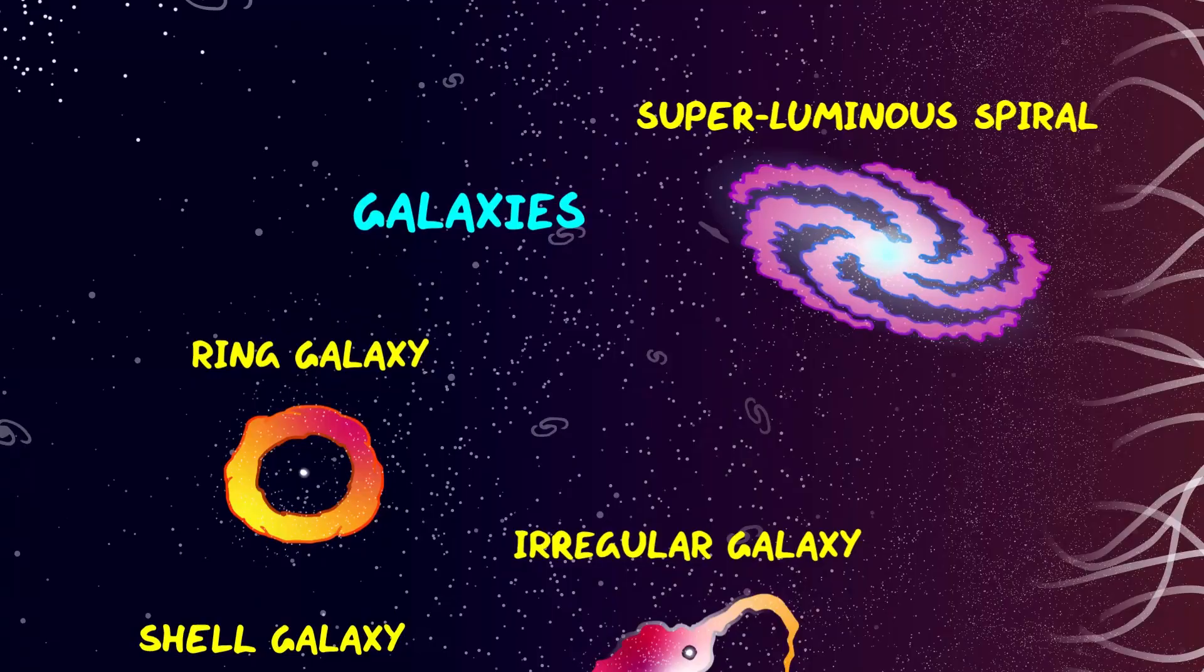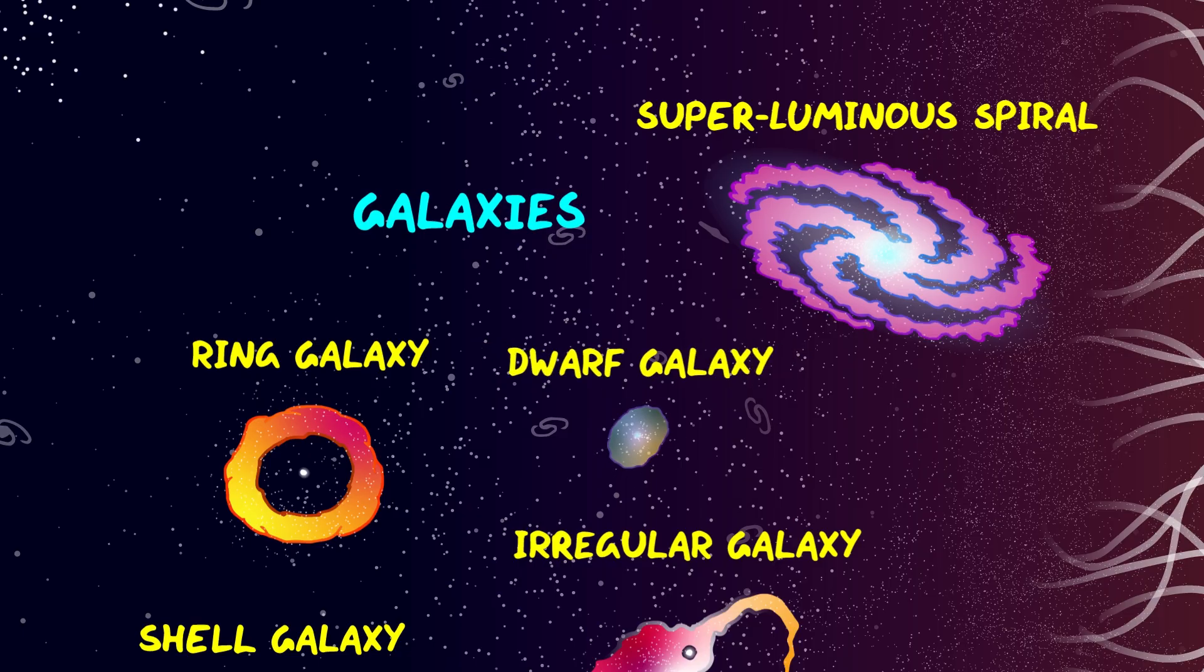There are superluminous galaxies, four times bigger than the Milky Way, but most galaxies in the universe are a lot smaller than ours, and they're called dwarf galaxies, containing a few billion stars about a hundredth the size of the Milky Way, and often they orbit the larger galaxies.